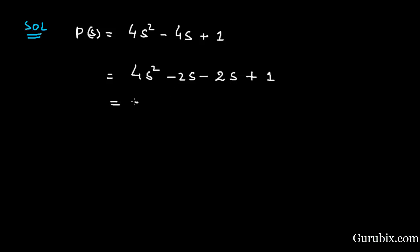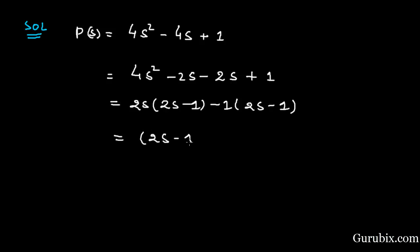Now we shall take 2s common from the first two terms, giving us 2s minus 1 in bracket. Then we take minus 1 common, giving us 2s minus 1. Finally, it is (2s minus 1) into (2s minus 1). These are the factors of the given polynomial p(s). Now we shall put p(s) equal to 0.